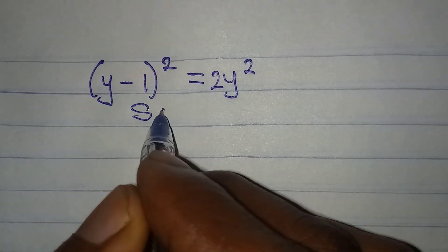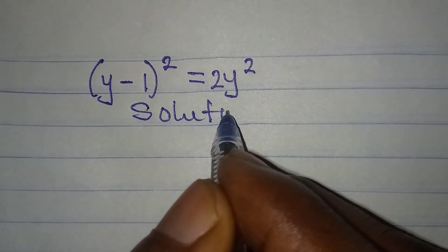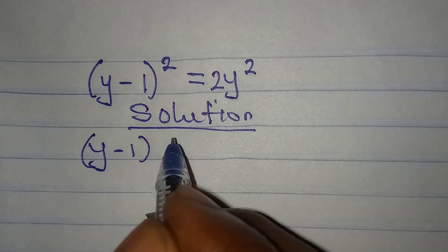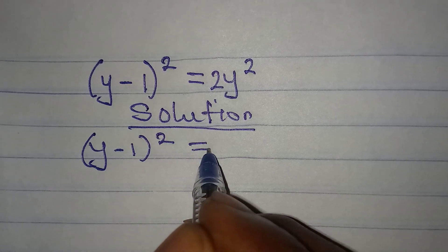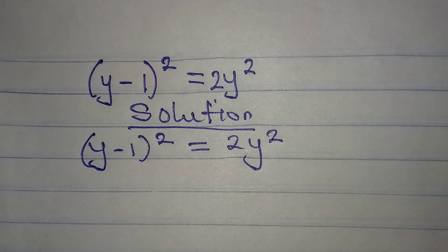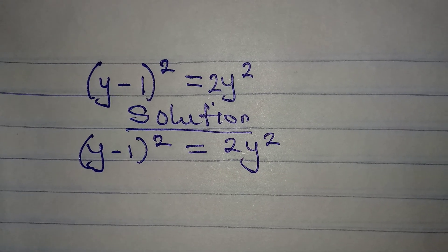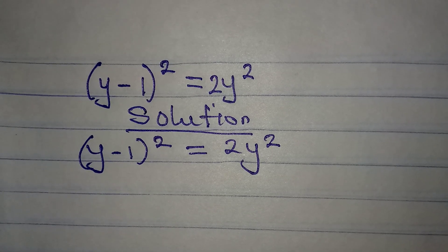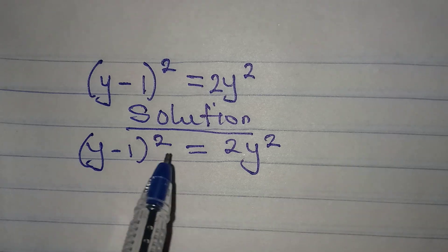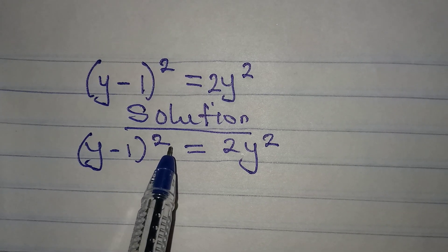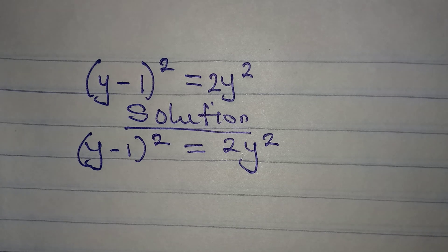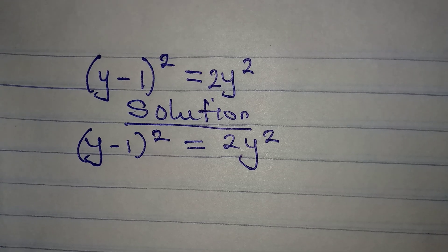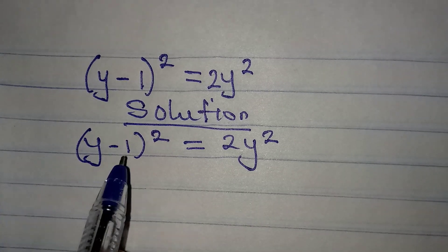Let's solve this problem very quickly. We have (y - 1)² = 2y². Because we have the highest power of 2, we should be expecting two different solutions. Let's go.